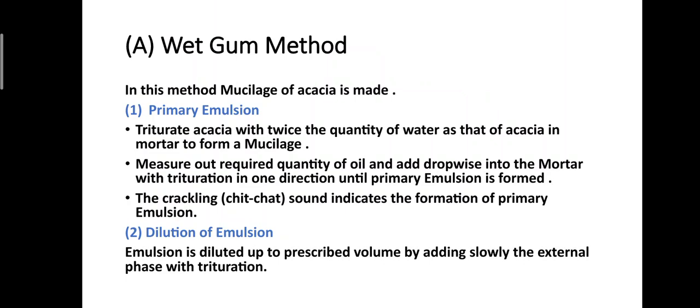After preparing the primary emulsion, the dilution process is carried out. The emulsion is diluted up to the prescribed volume by slowly adding the external phase with trituration. These are the steps for the wet gum method for preparation of emulsion.